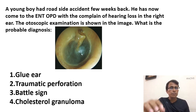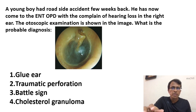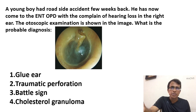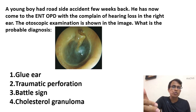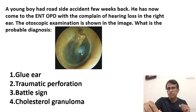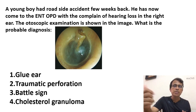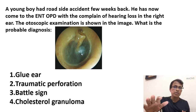Out of the four choices, two can be ruled out very easily. Traumatic perforation and battle sign — there is no perforation visible here. Although there is a history of trauma from a roadside accident, there is no perforation, so that's straightaway ruled out. Battle sign has nothing to do with the tympanic membrane; although it is also associated with trauma, it is skull-base trauma where the skin over the mastoid becomes bluish. So the answer is either glue ear or cholesterol granuloma.